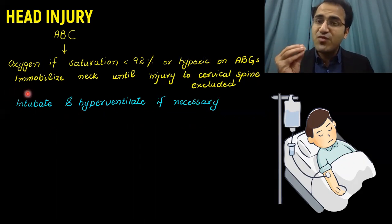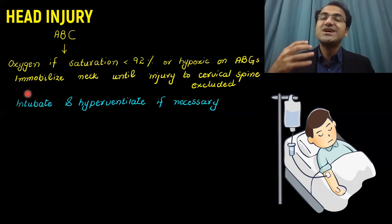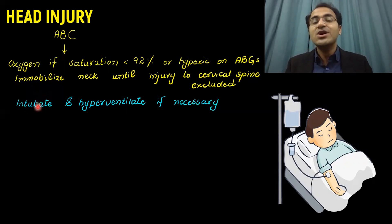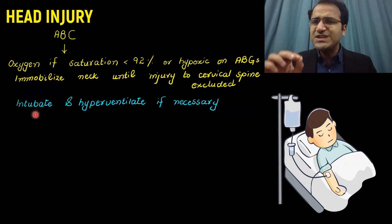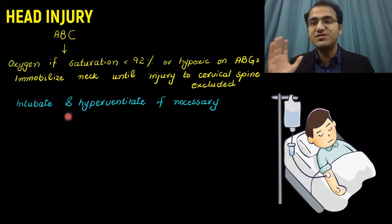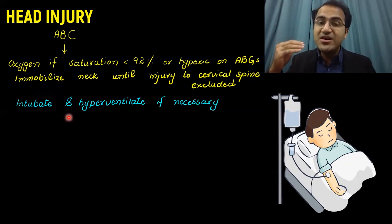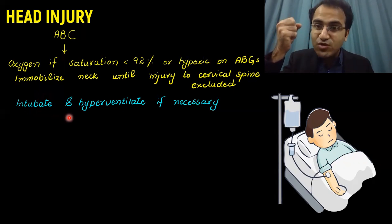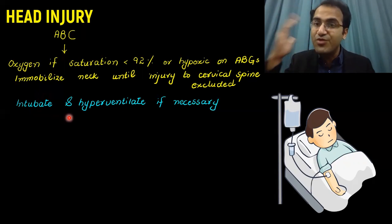Cases of trauma usually have a spinal injury, and while protecting the airway, slight negligence can damage the spinal cord — so immobilize the cervical spine. Intubate if the GCS is 8 or less. Hyperventilate the patient if necessary, because raised intracranial pressure can be treated by hyperventilation — washing out carbon dioxide causes vasoconstriction of brain vessels, lowering intracerebral pressure.